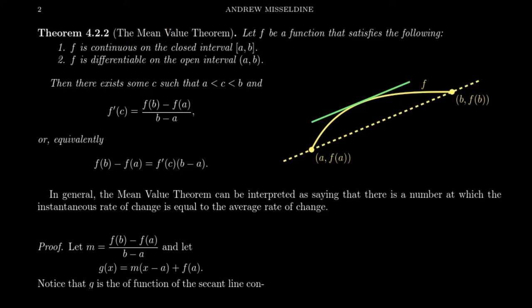If f is a function that satisfies two conditions: first, f is continuous on the closed interval a to b, and two, f is differentiable on the open interval a to b. The difference between an open interval and a closed interval is that the closed interval includes the endpoints x equals a and x equals b, while the open interval does not include the endpoints.